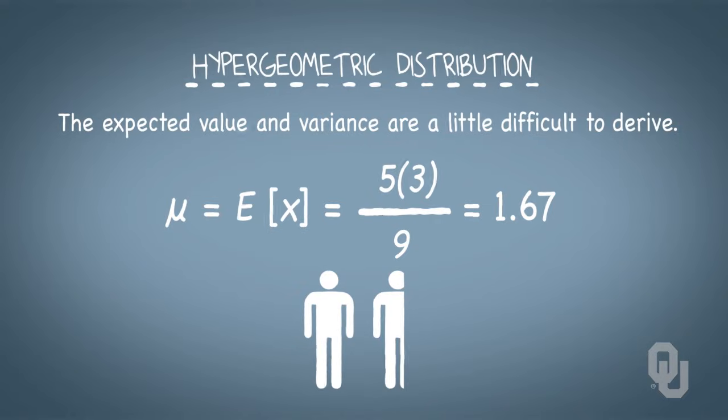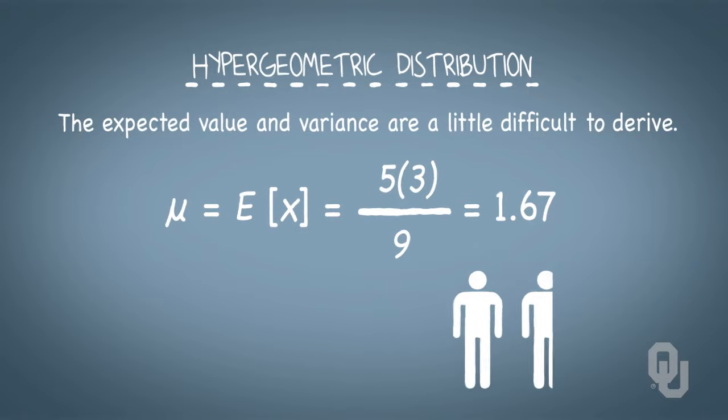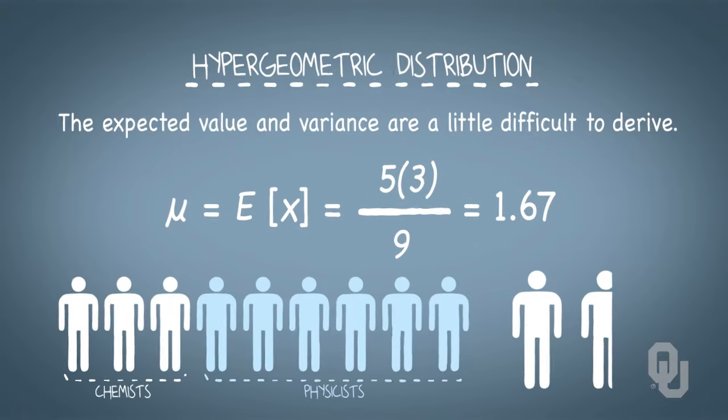On average, we'd expect to see 1.67 chemists on the committee. That is, if we simulated this process choosing a committee of size 5 from 3 chemists and 6 physicists over and over a bunch of times, we'd see 1.67 chemists on average.